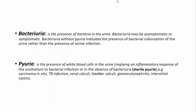Now the proper definitions: bacteriuria is the presence of bacteria in the urine, and it may be asymptomatic or symptomatic. Bacteriuria without pyuria indicates the presence of bacterial colonization rather than active infection. If you find bacteria alone without leukocytes, consider two things: contamination or asymptomatic bacteriuria due to colonization.